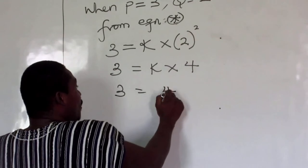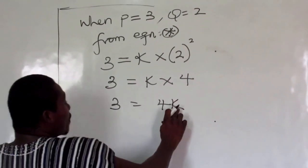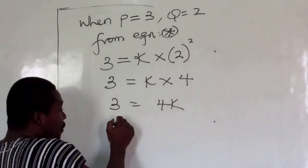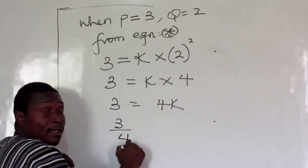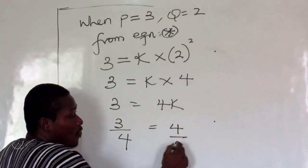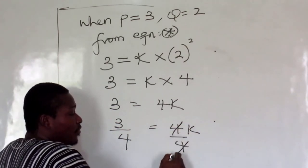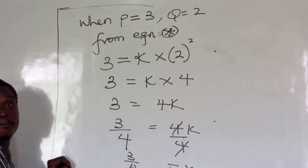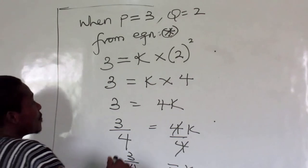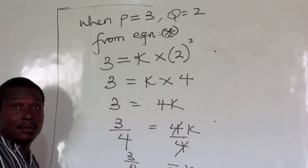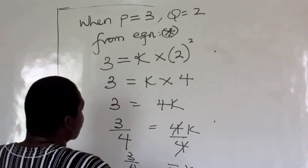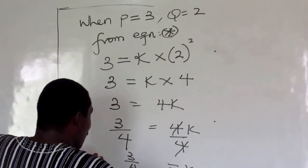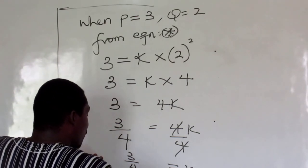Good, so that is 3 equals k times 4. So that is 3 equals 4k. Now if you are looking for k and you want k to stand alone, you just have to divide 3 by 4. Just to free the k, so that is k equals three-fourths.